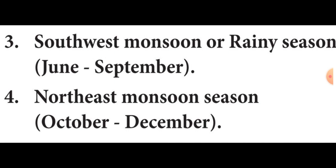The last season is northeast monsoon season. The southwest monsoon begins to retreat from north India by the end of September due to the southward shifting pressure belt. The southwest monsoon wind returns towards the Bay of Bengal; hence, it is known as northeast monsoon or post monsoon season. This season is associated with the establishment of the northeasterly wind system over the Indian subcontinent.